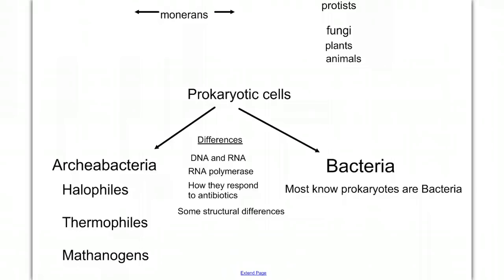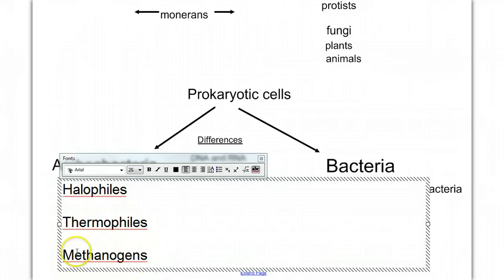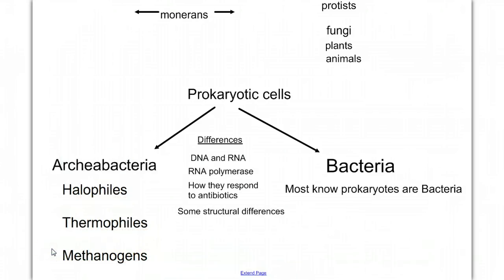The halophiles — 'halo' means salt — are salt lovers found in places with extreme salt conditions like a salt lake. The thermophiles are heat lovers found in places like thermal vents and hot springs, where water coming out of the earth is near 100 degrees boiling, and their enzymes are specialized for those extreme temperature conditions. The methanogens are bacteria that are anaerobic, meaning without oxygen. They live in very oxygen-poor, swamp, mud-like conditions and produce methane gas as a byproduct of their metabolism.